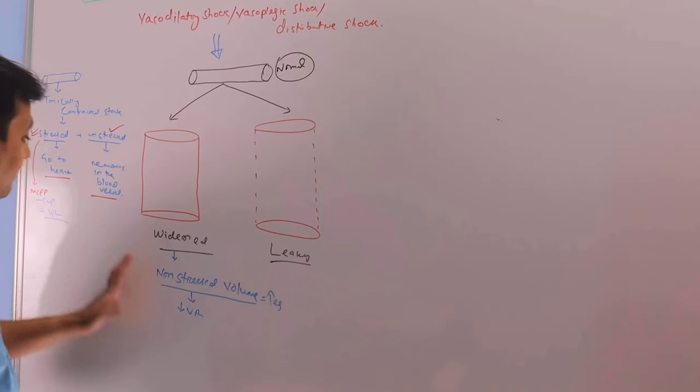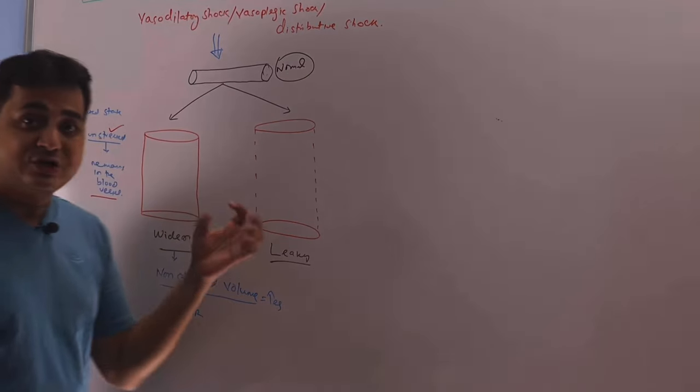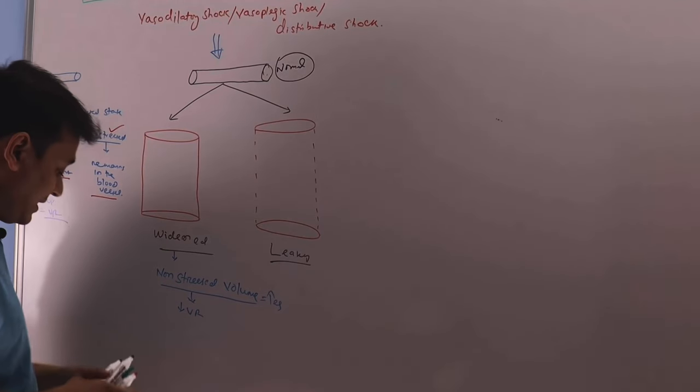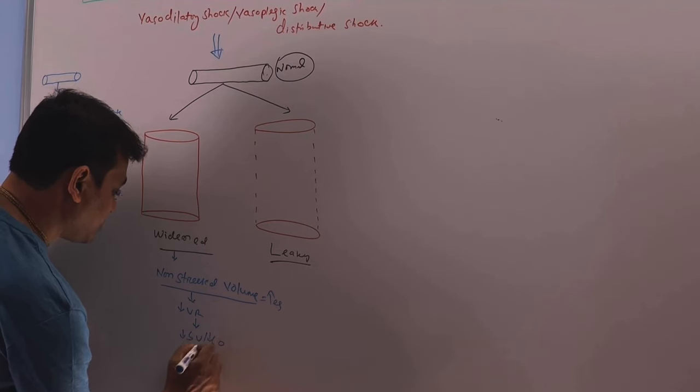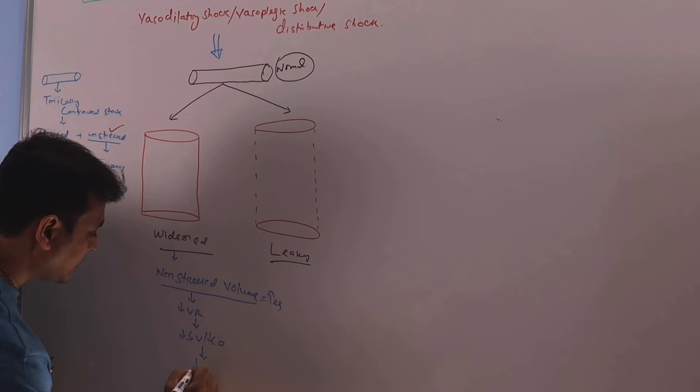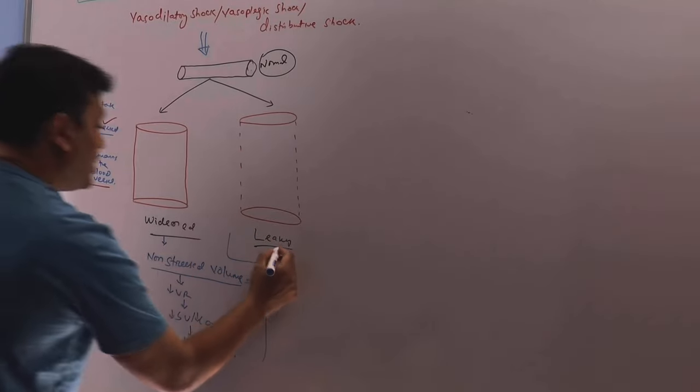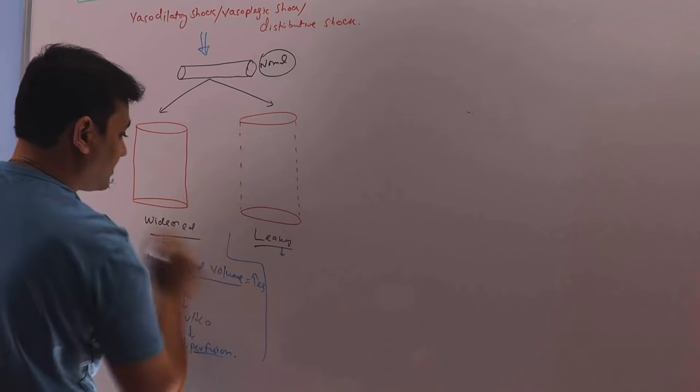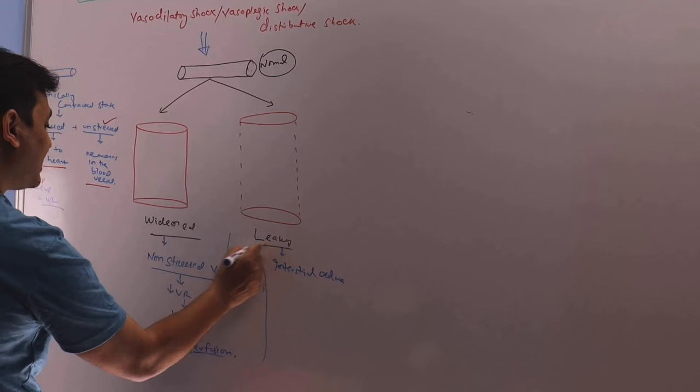But for today just remember that when the vessel is dilated, when the smooth muscle contraction is gone, the majority of the stressed volume now become unstressed. So that will cause the decrease in venous return and decrease in stroke volume or cardiac output which leads to decreased perfusion. And because it is leaky also, so there will be leakage of the intravascular fluid in extravascular space. So there will be interstitial edema and leak itself will increase the non-stress volume.